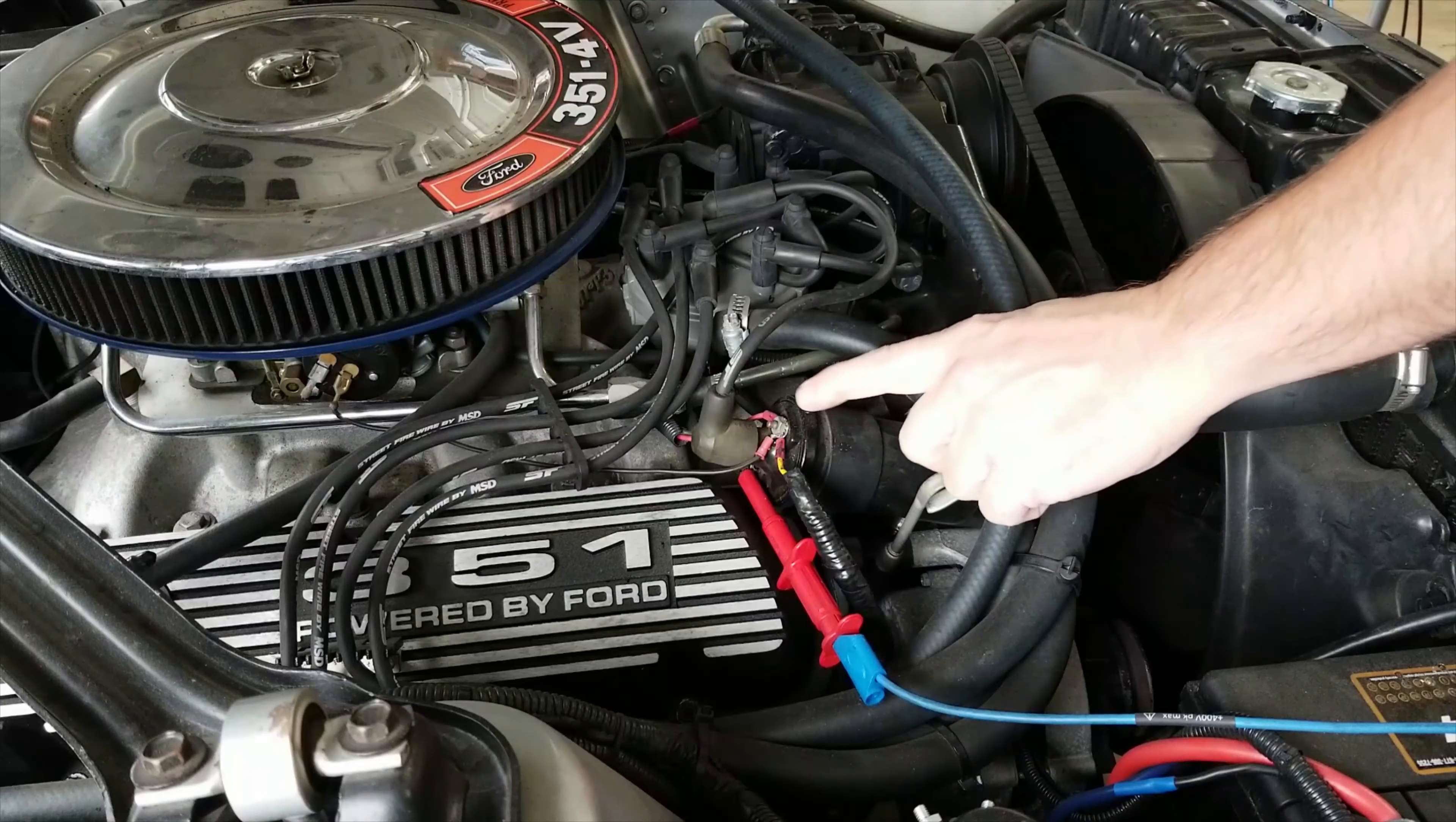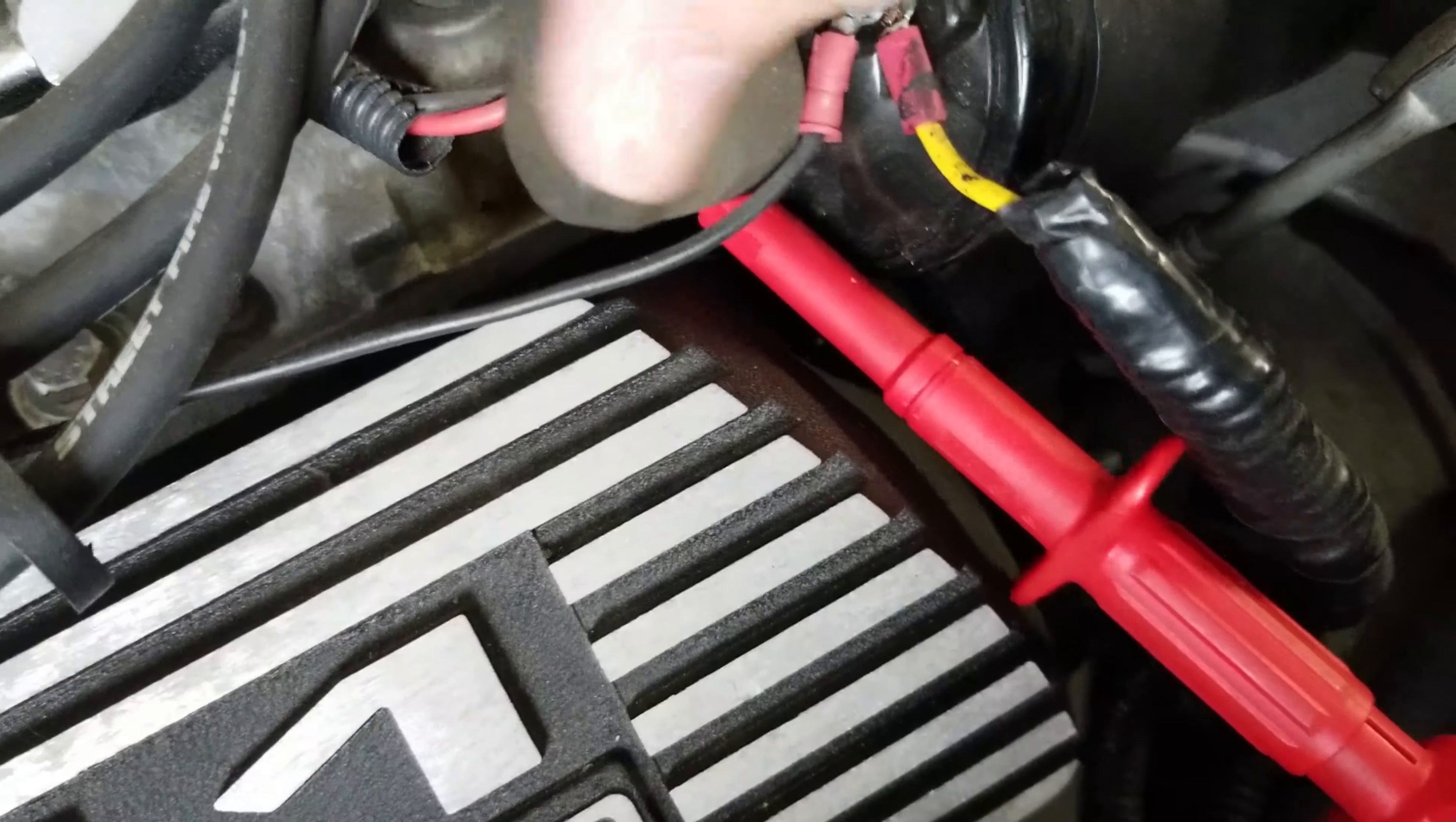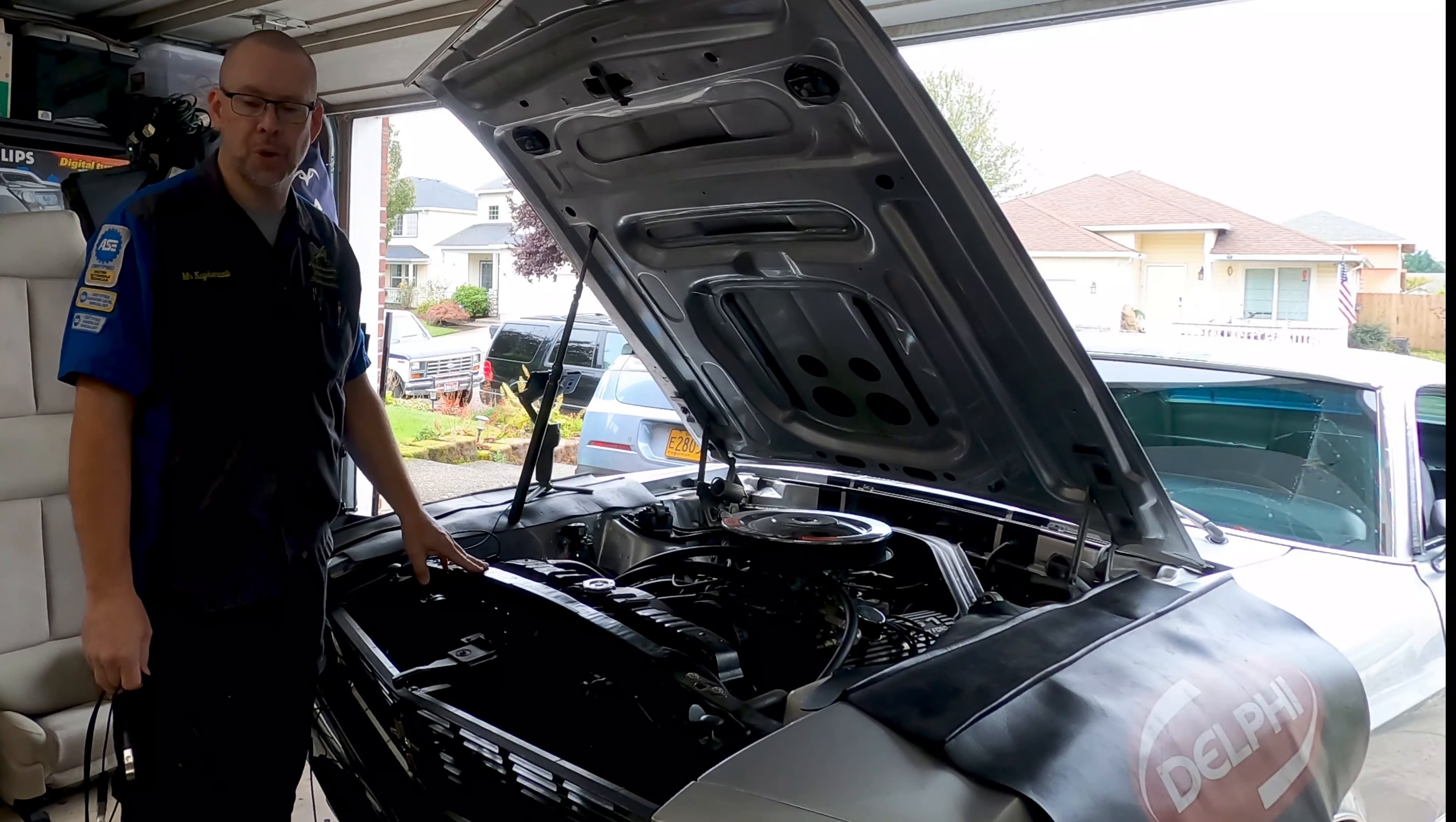We have our ignition coil, we have a positive terminal and a negative terminal, secondary terminal, distributor cap, plug wires, all that happy stuff. Now you can see when you look at that lower terminal you'll see where that clamp is connected and that is on the negative side of the coil. We're going to hook up on the negative side because that's the switching side. If we hook up on the positive side all we're going to see is a straight line.